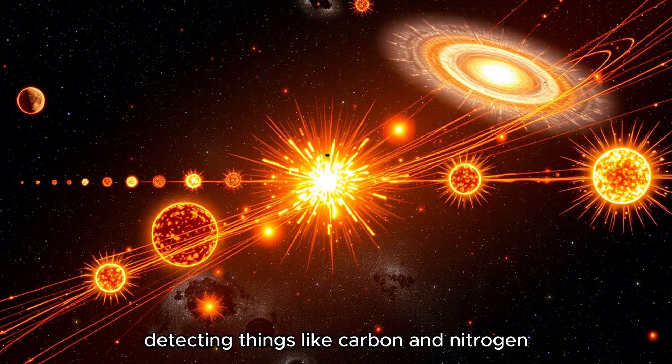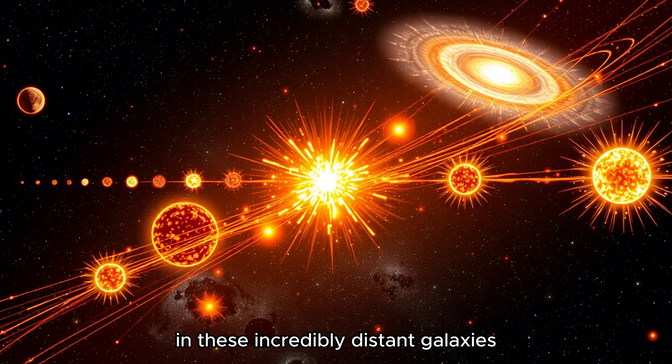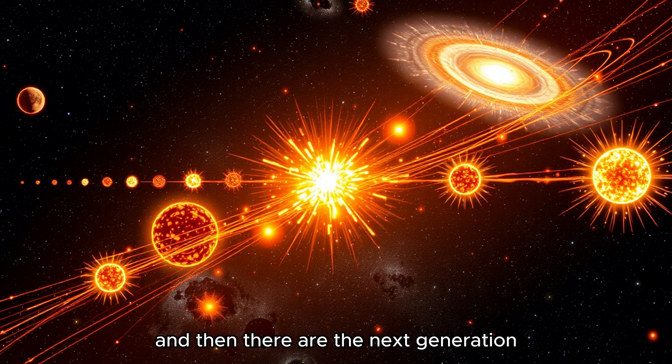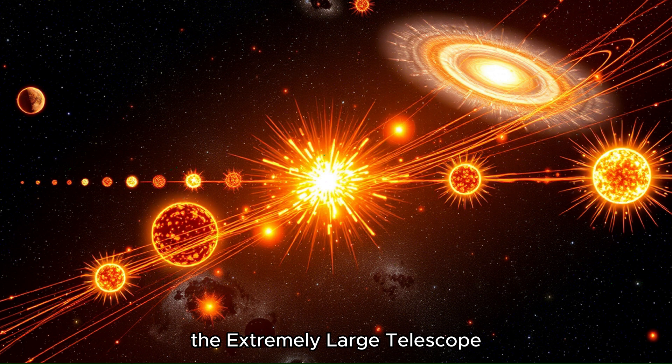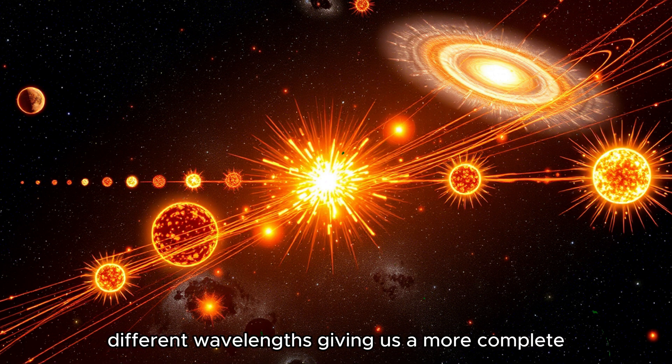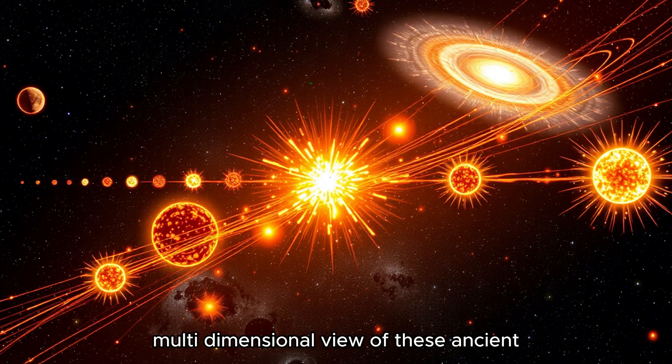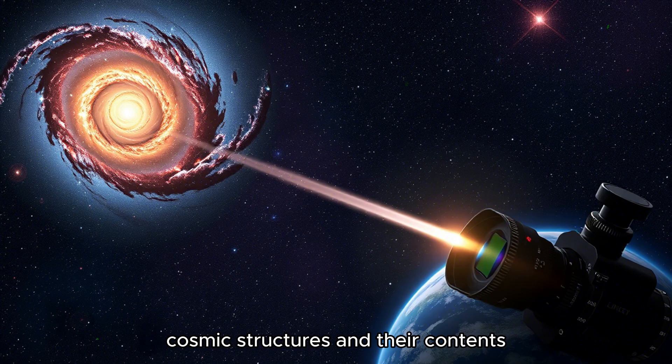Meaning they could find other elements, too. Not just oxygen. That's the hope. Detecting things like carbon and nitrogen in these incredibly distant galaxies would give us a much richer picture of the early universe's chemistry. And then there are the next-generation telescopes coming online. Like the Square Kilometer Array, the extremely large telescope. Precisely. They'll provide different perspectives, different wavelengths, giving us a more complete, multidimensional view of these ancient cosmic structures and their contents.